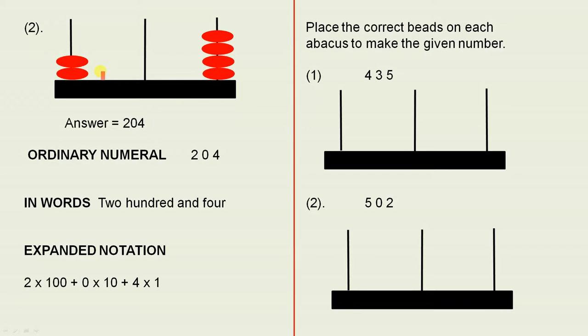Over here, let's have a look what we have. We've got two beads there, no beads here, and four beads there, so it's 204. As an ordinary numeral, 204. In words, two hundred and four. And in expanded notation, two times a hundred, plus zero times ten, plus four times one.